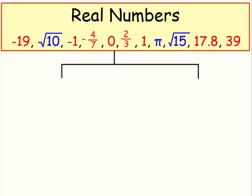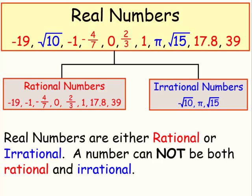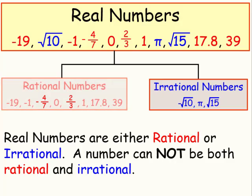The real number system is made up of two groups: rational numbers and irrational numbers. A number cannot be both rational and irrational. In this lesson, we'll be talking about a subset of numbers in the rational number system.